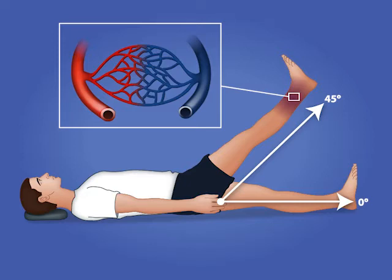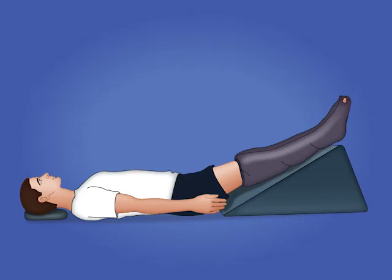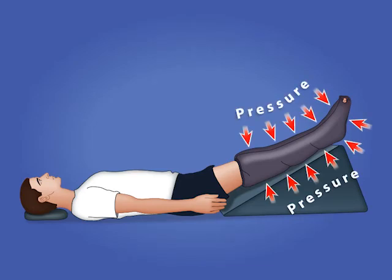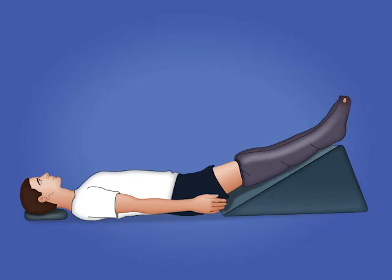It is recommended that a compression device be applied to the limb in conjunction with elevation. Compression devices can be circumferential or sequential. Circumferential devices apply compression with equal pressure around the area. Sequential compression devices have compartments that fill from distal to proximal, pushing fluids toward the heart.